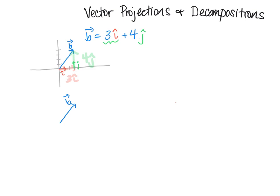Another way we could think about this vector is not writing it as a vector parallel to the x-axis plus a vector parallel to the y-axis. We could think of just rotating our axis any direction we wanted. Suppose I rotate it this way — how could I write vector b as a sum of two new vectors? I'll call this one u, a unit vector in this direction, and this one v, another unit vector orthogonal to it.